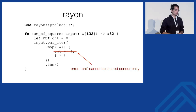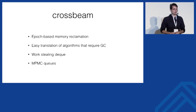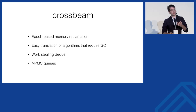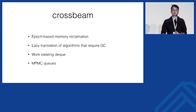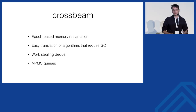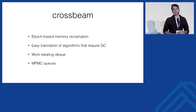The last crate I want to mention is Crossbeam, primarily targeted at porting concurrent algorithms from GC languages into Rust. Most concurrent data structure research is done in languages like Java, which have a garbage collector, meaning most algorithms don't explicitly deallocate memory. Crossbeam provides epoch-based memory reclamation — a mini GC localized to this one crate — making it easy to port these libraries from Java into Rust. Inside Crossbeam you'll find work-stealing deques that Rayon uses, MPMC queues for multiple consumers, and much more.